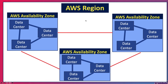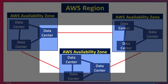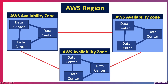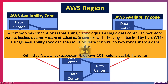To strengthen the concept further: a common misconception is that a single zone equals a single data center. In fact, each zone is backed by one or more physical data centers — with the largest backed by five. A single Availability Zone can span multiple data centers, but no two zones share a data center.